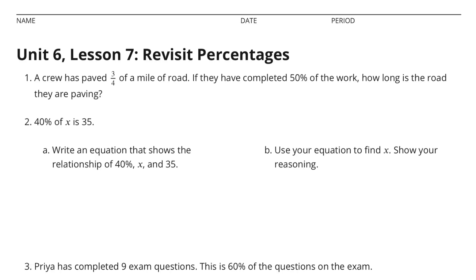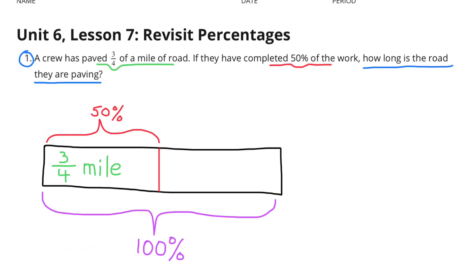Unit 6 Lesson 7: Revisit Percentages. Problem 1: A crew has paved 3 fourths of a mile of road. If they have completed 50% of the work, how long is the road they are paving?